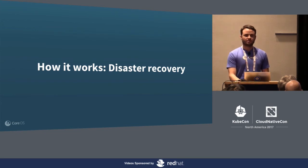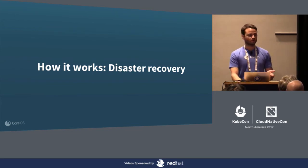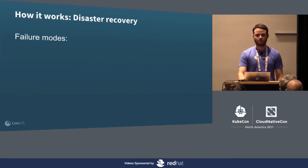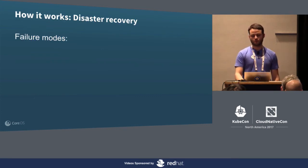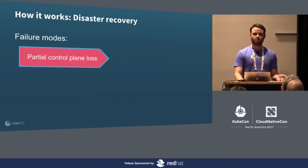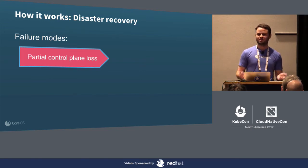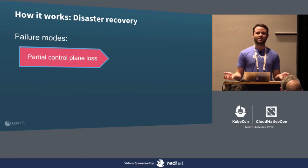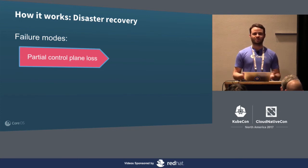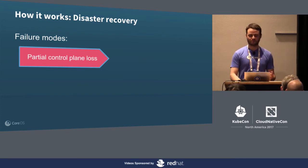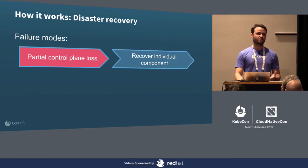The last piece I want to cover is disaster recovery. Things can and will go wrong with your cluster due to bugs, operator error, or other causes. What failure modes might you see in a self-hosted cluster? First, partial control plane loss — say someone is editing their kube-scheduler deployment and accidentally scales it down to zero. You have a problem because there's no scheduler to decide which node it should run on, so you'll have to recover the scheduler itself.